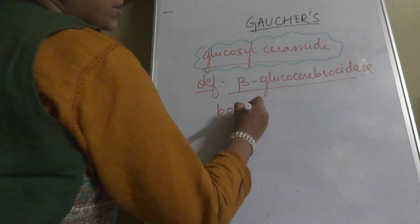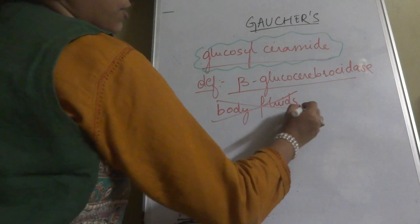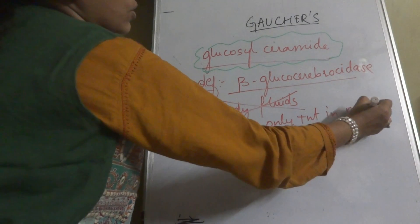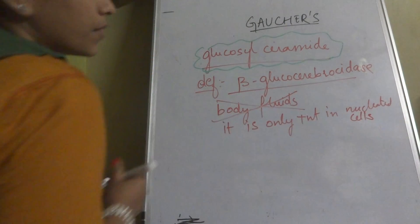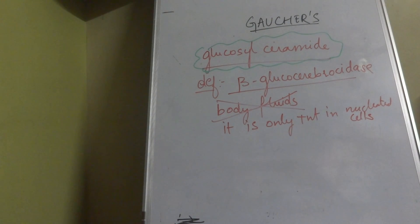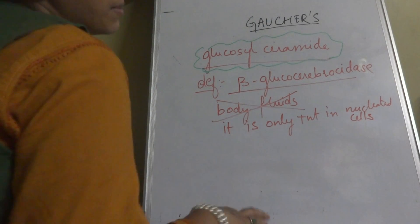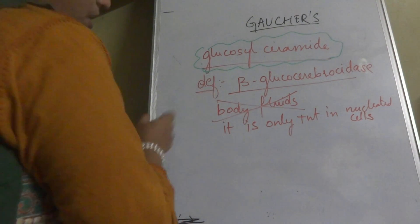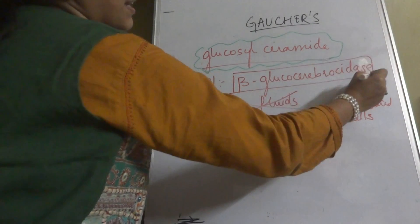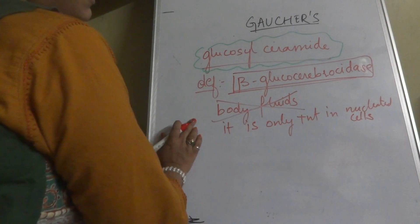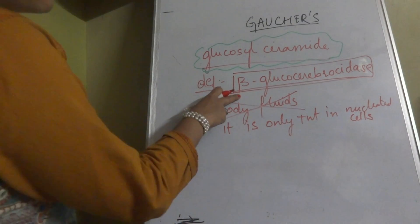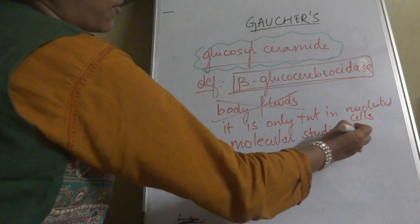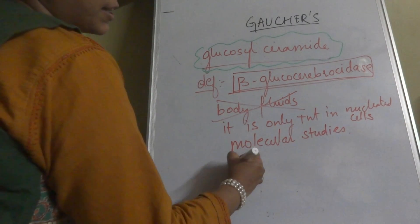Beta-glucocerebrosidase, also known as acid beta-glucosidase, is not present in body fluids. It is only present in nucleated cells. Unlike enzymes such as acid phosphatase or alkaline phosphatase that appear in serum during cell injury, this enzyme does not appear in serum. Therefore, to detect its deficiency you must perform molecular or mutation studies.